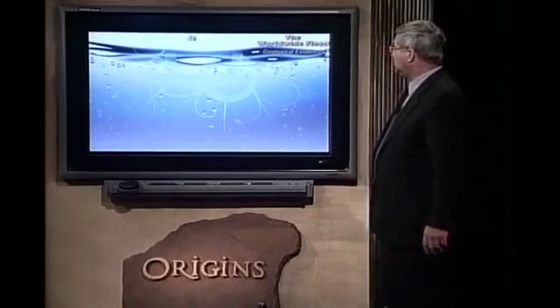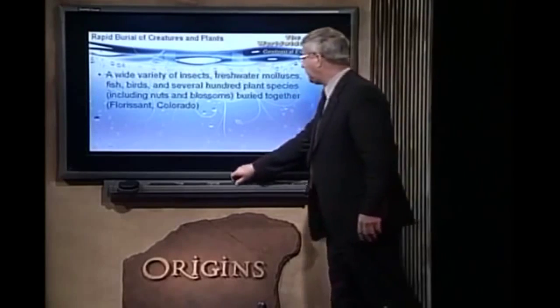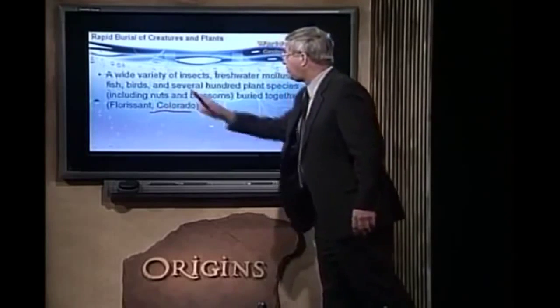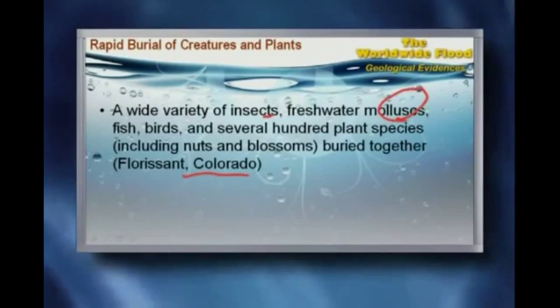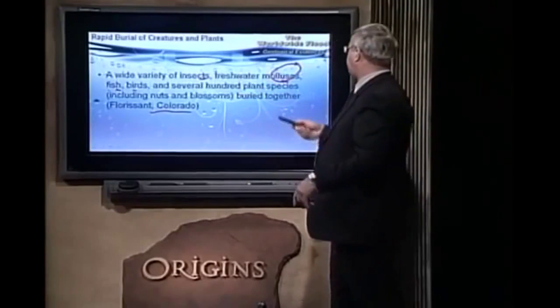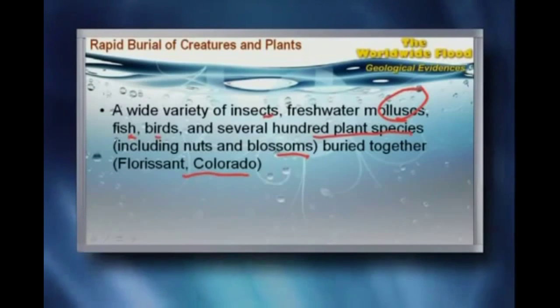In Colorado at the Florence and Canon City beds, we see insects, freshwater clam shells, fish, and birds. How do you fossilize a bird slowly? It's got to drop from the sky and get buried straight away. And there are a hundred plant species including blossoms — all buried together. A mixture of watery and land creatures in that same bed.